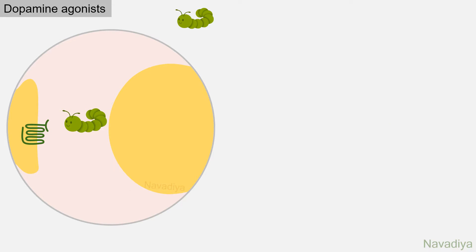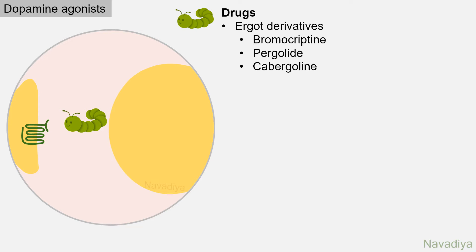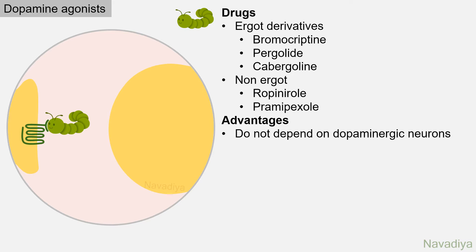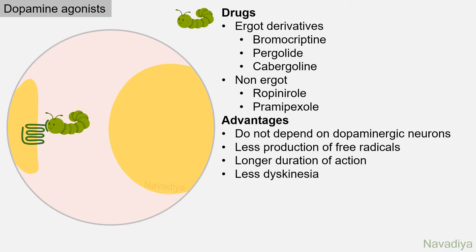Next is the group of dopamine receptor agonists. It has ergot derivatives like bromocriptine, pergolide, and cabergoline. Non-ergot drugs are ropinirole and pramipexole. They bind directly with dopamine receptors. There are several advantages: their activity is not dependent on dopaminergic neurons of the nigrostriatal pathway, there is less production of free radicals compared to dopamine, they have longer duration of action, cause less dyskinesia, and have less on-and-off phenomenon.